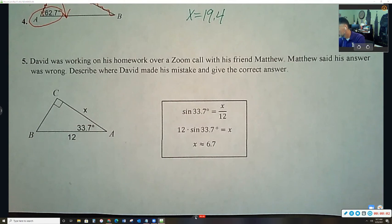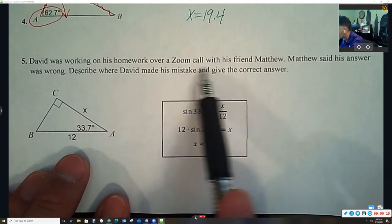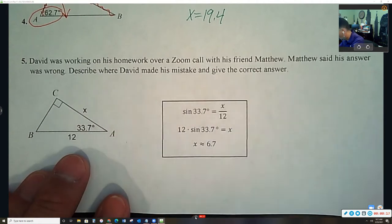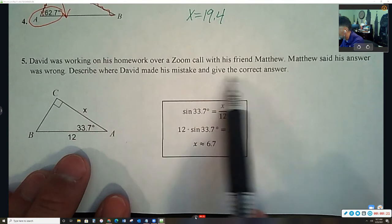Now in the last one, we need to find the mistake the student made. And this is how I suggest you do that. David was working on his homework over a Zoom call with his friend Matthew. Matthew said his answer was wrong. Describe where David made his mistake and give the correct answer.